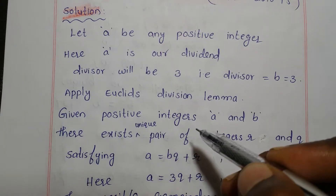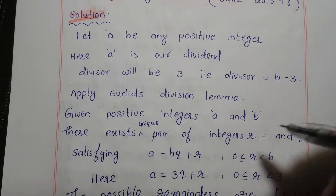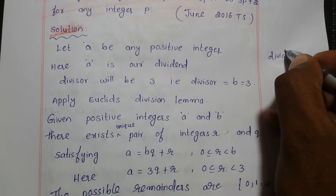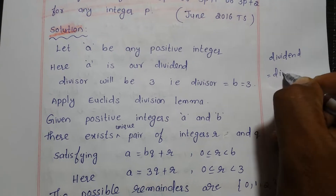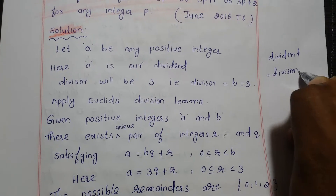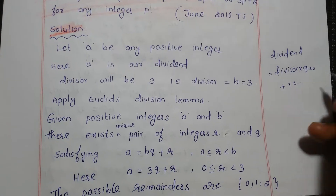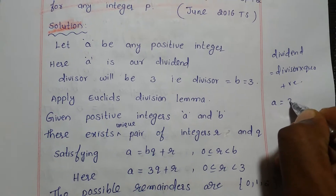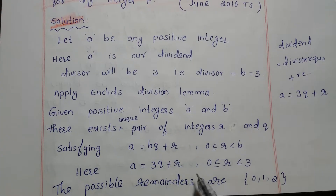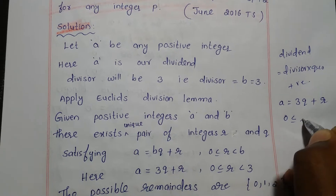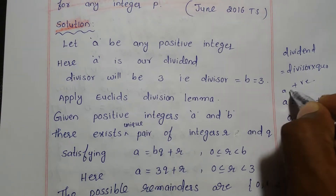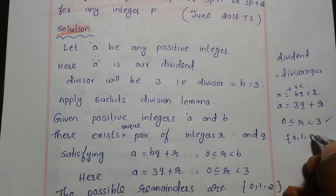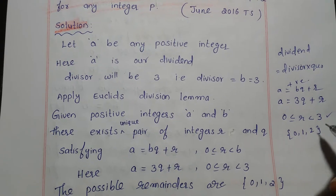Now we apply Euclid's division lemma: for a given positive integer a and b, there exist a unique pair of integers q and r satisfying a equals b times q plus r. That is, dividend equals divisor into quotient plus remainder. Here the dividend is a, divisor is 3, quotient is q, and the condition is 0 less than or equal to r less than b, where b is 3.